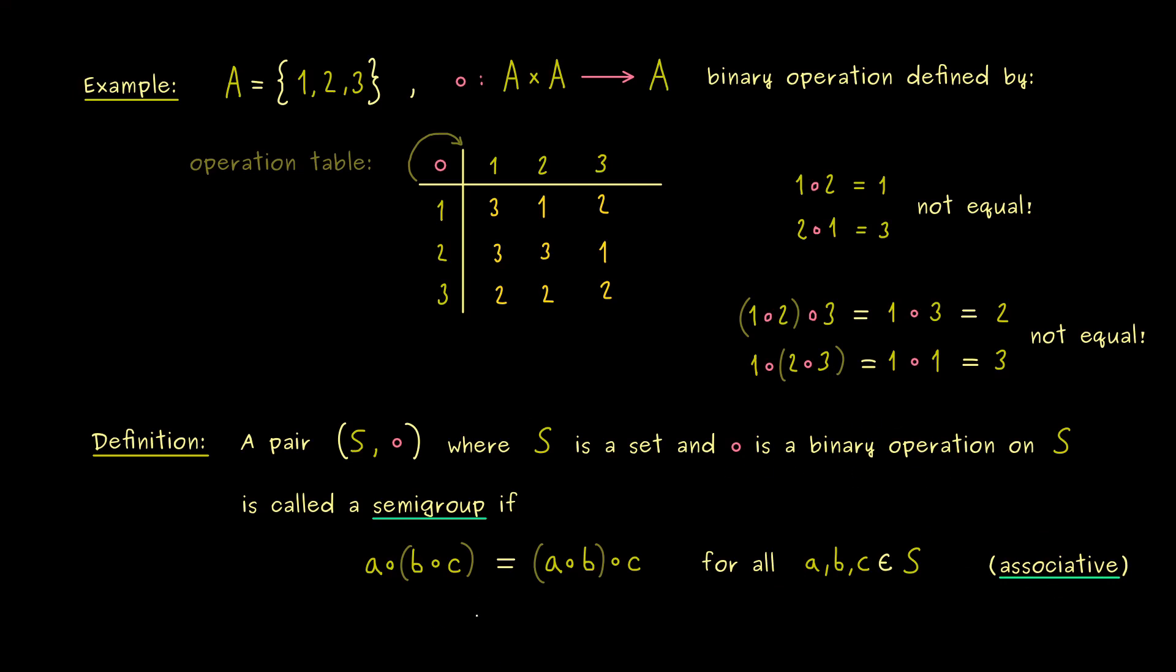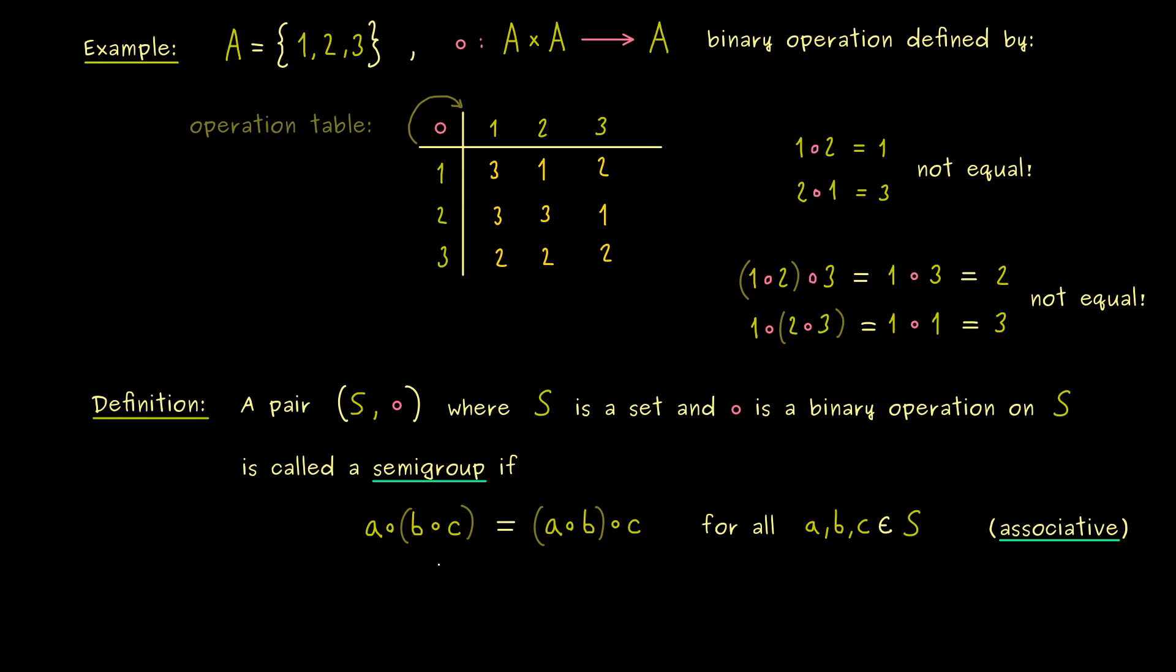And please don't forget, associativity now allows us to omit the parentheses all together. In general, writing this for a binary operation would make a problem, but not for an associative one. However, still, it's not allowed to change the overall order in this combination here. Okay, then I would say, let's look at an example again.